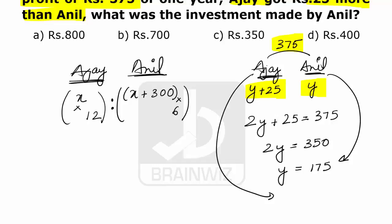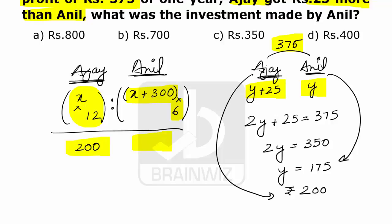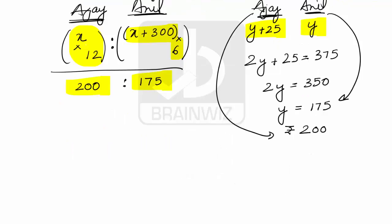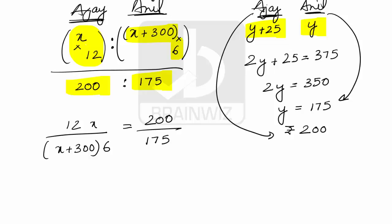Ajay's profit share is 12X and Anil's is 6 times (X plus 300), and these must equal 200 and 175 respectively. Equating: 12X divided by 6(X plus 300) must equal 200 divided by 175. Simplifying 200/175 — both are in the 25 table — gives 8 over 7.